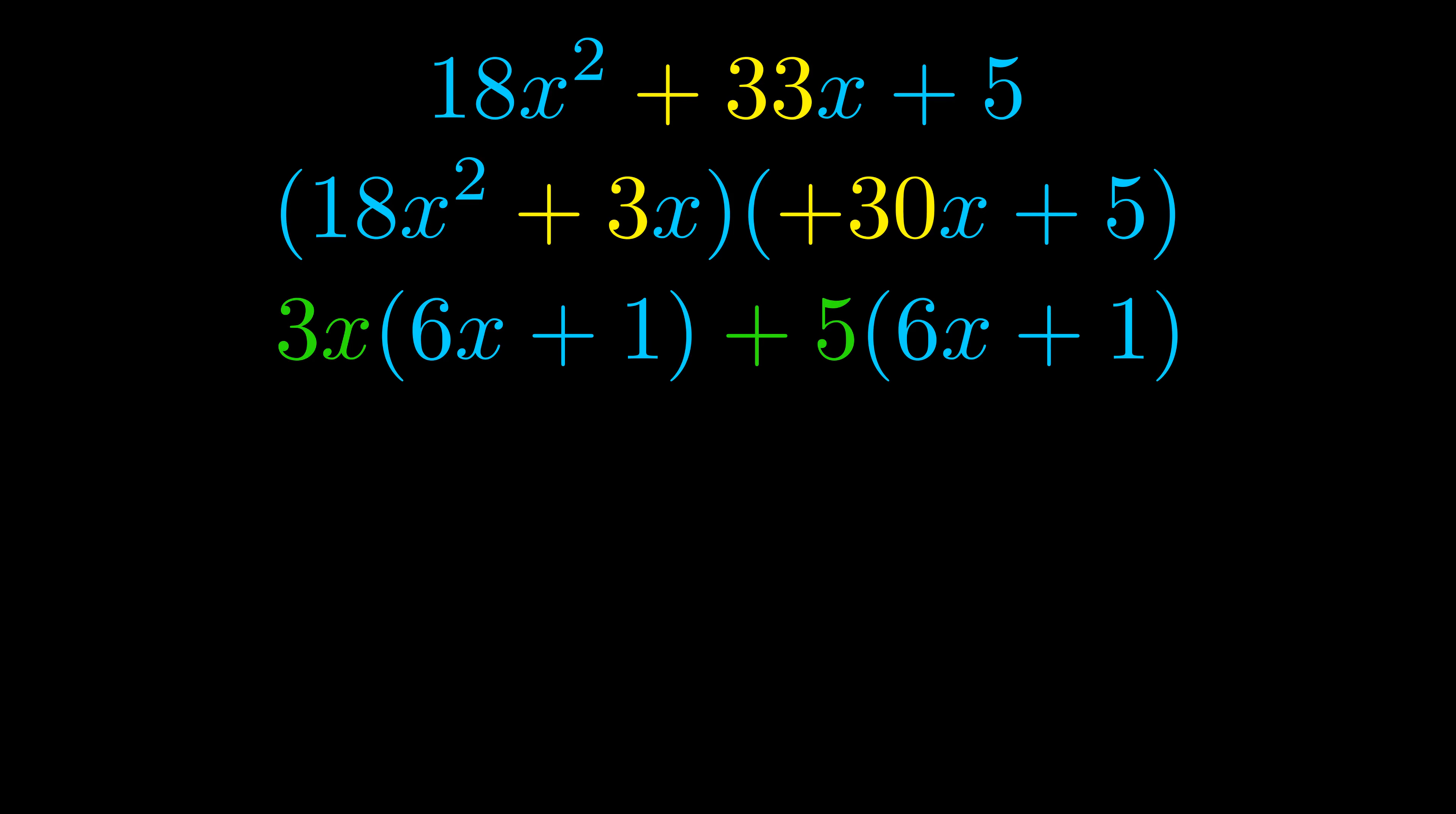The blue values are the same. Those blue values will become one of our factors and we will combine the two green values, the GCFs that we pulled out, to get the other one. And that is our fully factored equation.